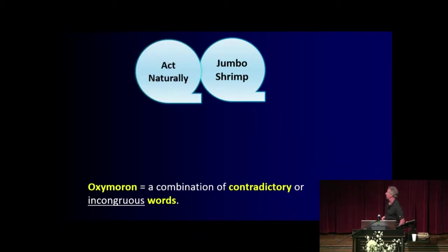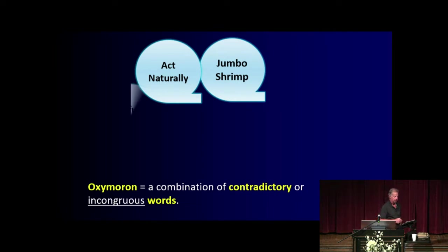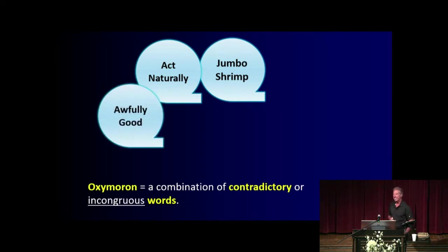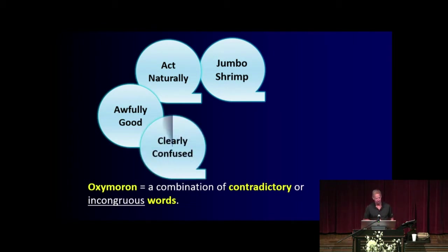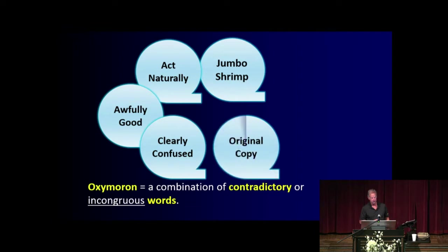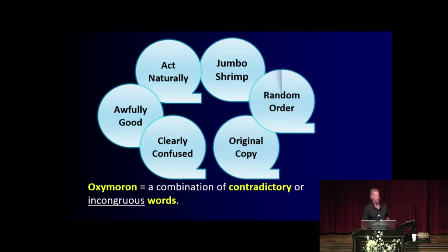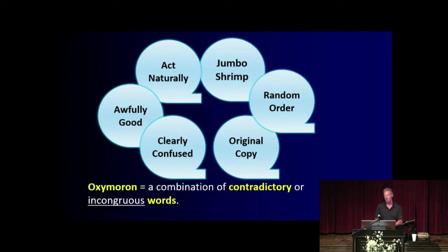Awfully good — this is actually one I use in my vocabulary. He was clearly confused. Act naturally. Original copy. And I like this one: random order. So these are examples of oxymorons. You have a couple of words that are contradictory or incongruous — that means they just don't harmonize. That's your big extra word learning for this evening.